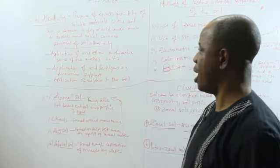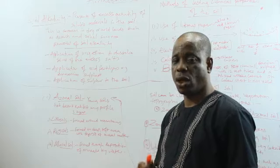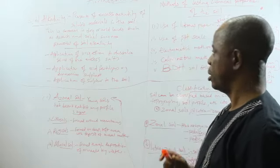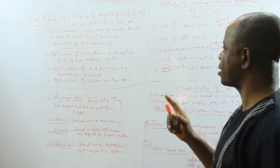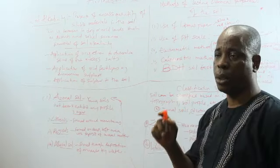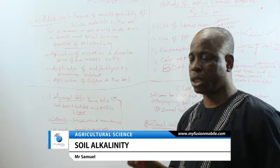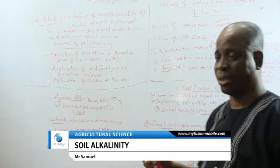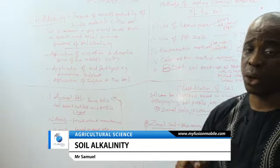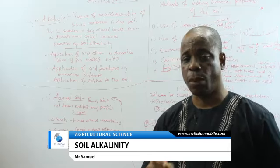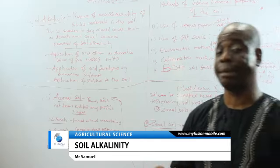Now let's go to soil alkalinity. This is the presence of excess quantity of soluble materials in the soil. It's good to have soluble materials in the soil - these are things that crops require. If they are not present, the soil becomes acidic.